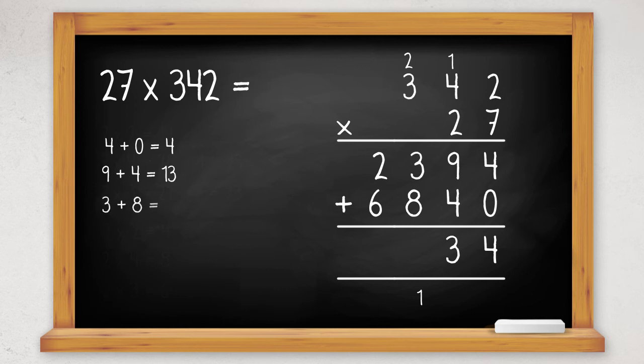3 plus 8 is 11, plus this one makes 12, so 2 down and carry the 1. 2 plus 6 is 8, plus this one we carried makes 9. So the answer is 9,234.